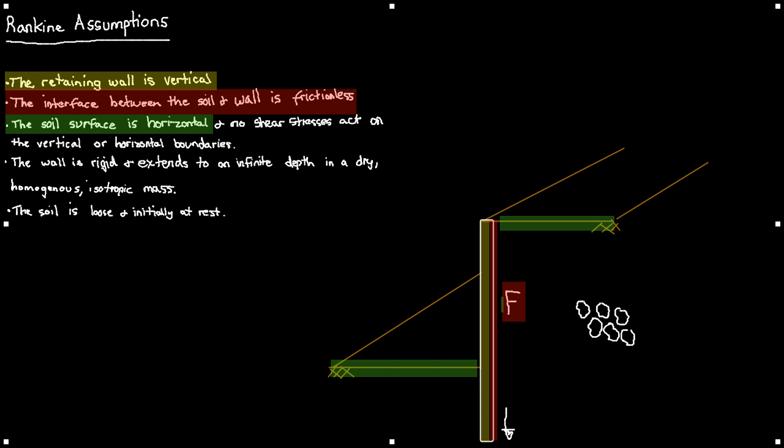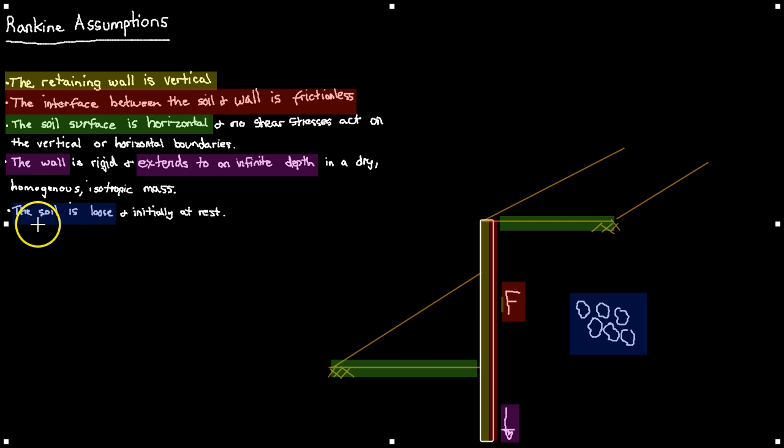Then this arrow down here at the bottom of the diagram is prompting me that the wall is extending to an infinite depth and then that helps me go on to say the wall is rigid and in a homogeneous isotropic mass. Then, these little particles over here spaced out just prompting me to say the soil is loose and going on to say initially at rest state.